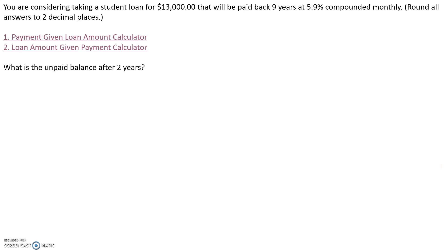In this problem, we are considering taking a student loan for $13,000 that will be paid back in nine years at a rate of 5.9% compounded monthly, which means we are making monthly payments. We want to find out what is the unpaid balance after two years.